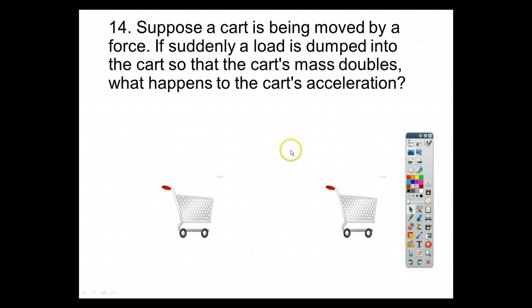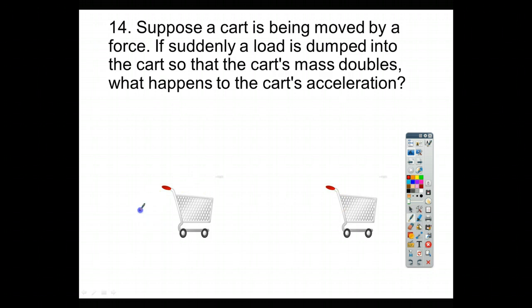For number 14, it says, suppose the cart is being moved by a force. If suddenly a load is dumped into the cart so that the mass doubles, what happens to the acceleration? Here we've got a force. We'll just make it that size of an arrow. We have exactly the same force here. This one is empty, but we add a bunch of boxes. We all of a sudden drop a bunch of boxes down inside of this one, so that the mass becomes 2m. Here we've just got m. It says that f is equal to ma. If I know that f is the same and the mass goes up by 2, we know that the acceleration has to go down by 2. So, that would be one half of the amount that we had before. And then that way, our force is exactly the same. So, here for number 14, it halves.